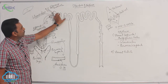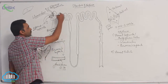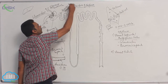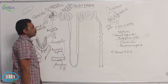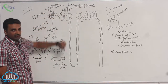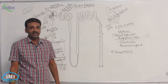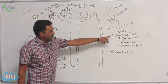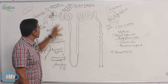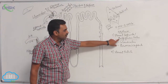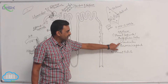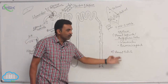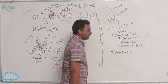Bowman's capsule opens into the proximal convoluted tubule. 'Proximal' means closer to the renal corpuscle. That completes the renal corpuscle — also called the Malpighian body — which contains the glomerulus and Bowman's capsule. Now we move on to the renal tubule, which is the second part of the nephron.